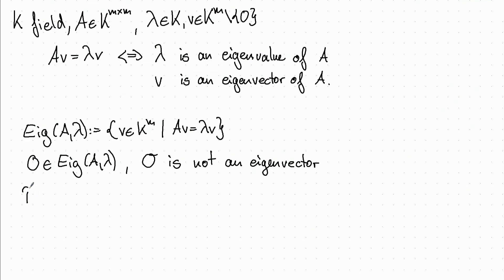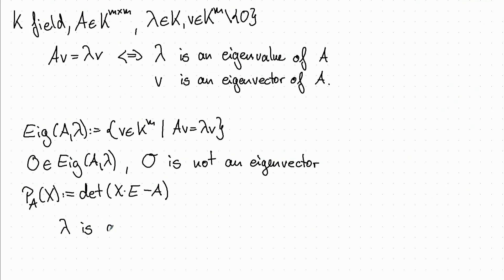There is a nice criterion for computing the eigenvalues. For this, we have to define the characteristic polynomial of the matrix. We consider x an independent variable and we define P_A of x, the characteristic polynomial, as the determinant of x times the unit matrix minus A. Then we have that lambda is an eigenvalue of A if and only if it is a zero of the characteristic polynomial.